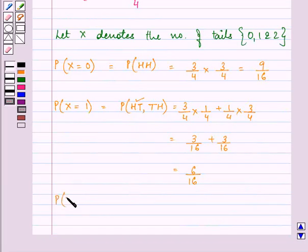Last thing, probability when X is equal to two. That is probability of getting two tails. That will be one by four into one by four, giving us the answer as one by sixteen.